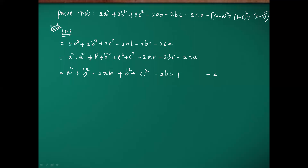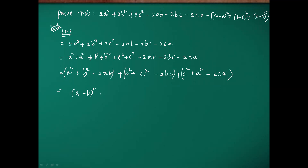Next going to -2ca. We have another c² and another a² available, so c² + a² - 2ca. Now you can see all the a², b², c² terms have been used — one each pair. This gives us (a-b)² plus (b-c)² plus (c-a)².